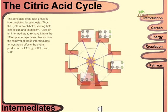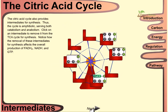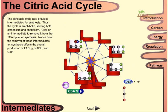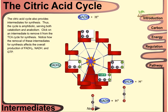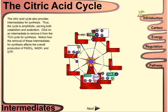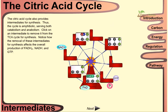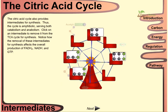The citric acid cycle also provides intermediates for biosynthesis. Thus, the cycle is amphibolic — serving both catabolism and anabolism.